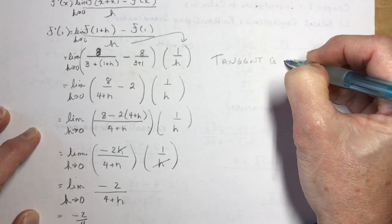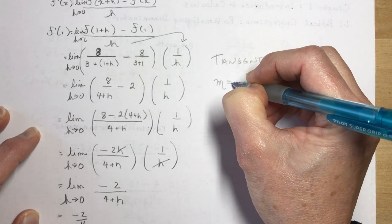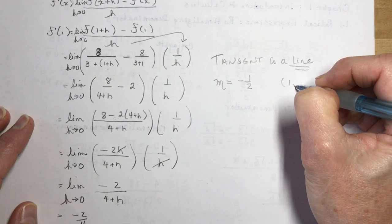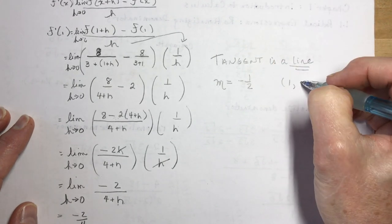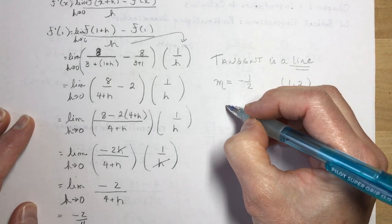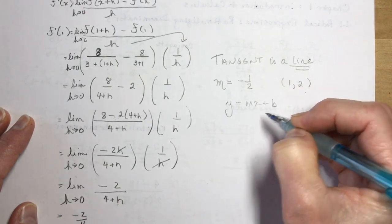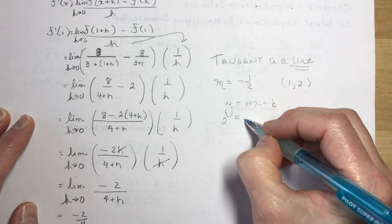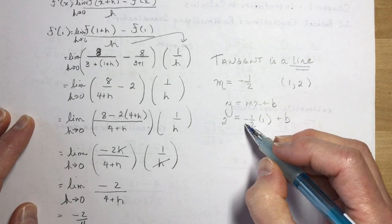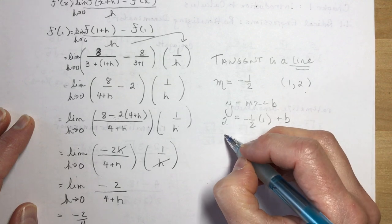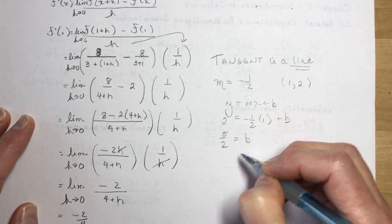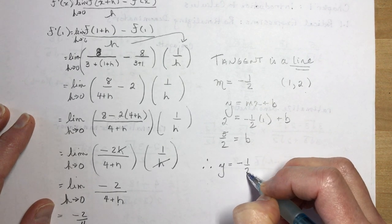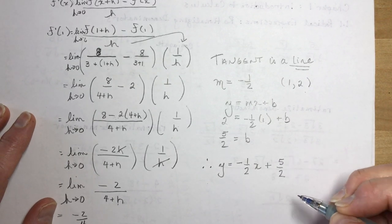We also need the equation of the tangent line. The slope is minus one half, and when x equals 1, y equals 2, so the point is (1, 2). Using y equals mx plus b: 2 equals minus one half times 1 plus b, so b equals five halves. The tangent line is y equals minus one half x plus five halves. In standard form: x plus 2y minus 5 equals zero.